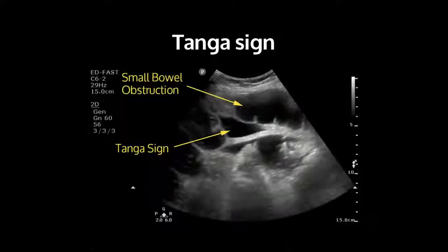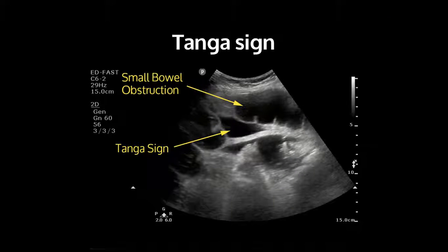The Tanga sign is seen when there is free fluid around a small bowel obstruction — the free fluid often takes a triangular shape. The Tanga sign was not named after a great clinician or a prolific researcher; it was named after a type of bikini.